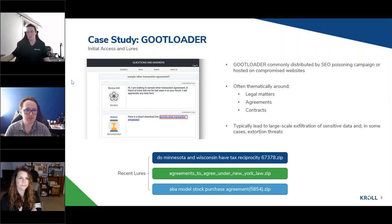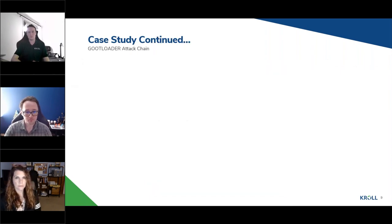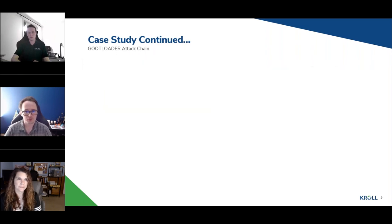The top one in particular is quite interesting — it relates to US state tax information, and that was actually seen during the middle of the US tax calendar. So threat actors appear to certainly be adapting to key dates to change their thematics, similar to how we'd normally see it with phishing lures. GOOTloader infections typically lead to large-scale exploitation of data, and in some cases extortion threats.